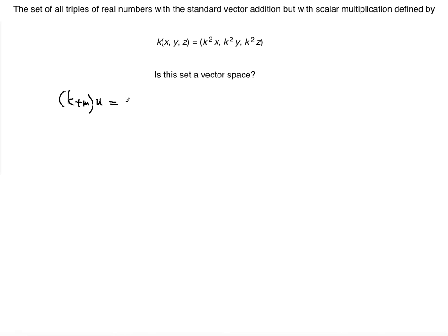Axiom number eight is that K plus M multiplied by the object U should be equal to K times U plus M times U, and obviously K and M are scalars. I'm going to test this against the constraint. If this axiom fails, then this set is not a vector space.